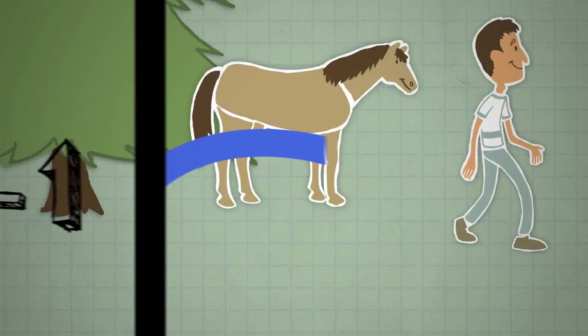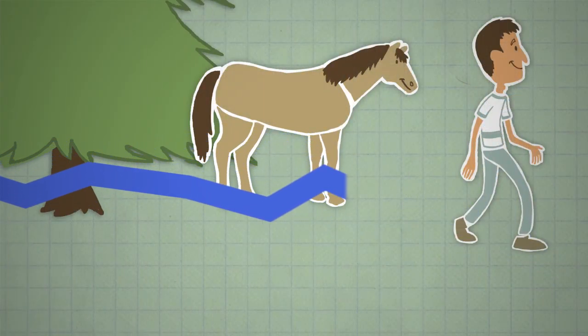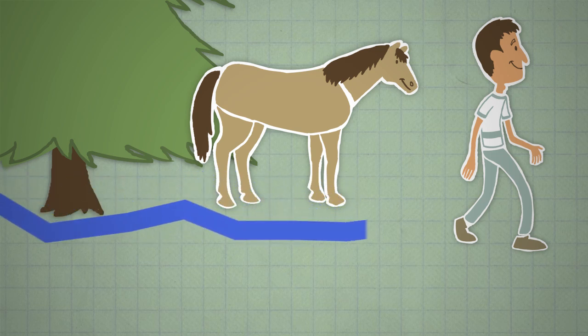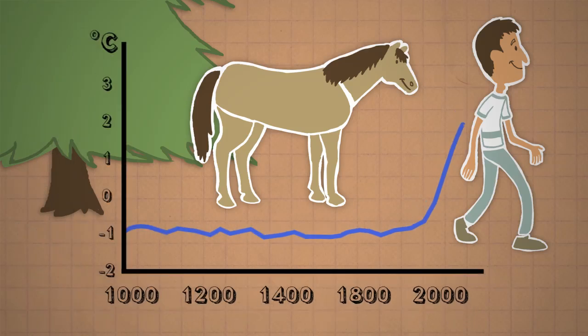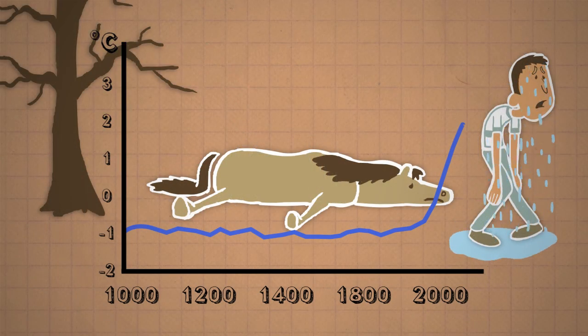But here's the thing. Scientists who carefully study today's climate have noticed something out of the ordinary happening. The Earth's climate is now changing faster than it ever has before, and living things can't adapt that fast.